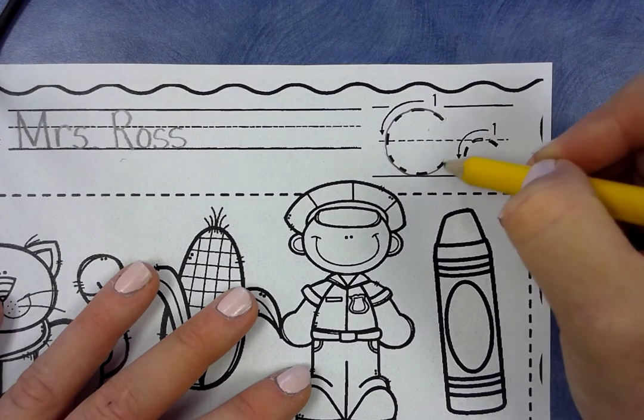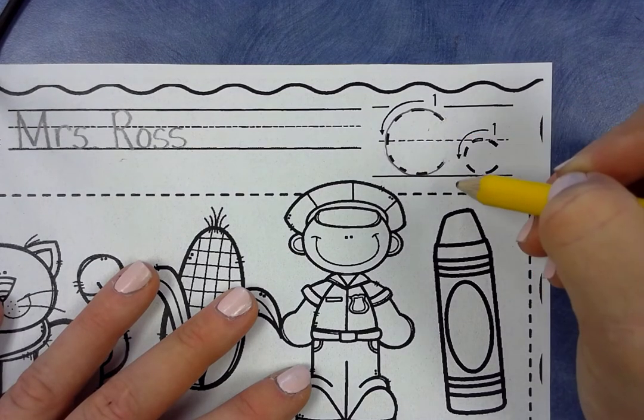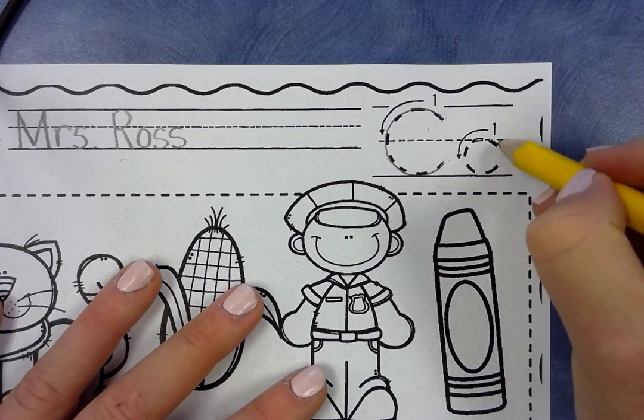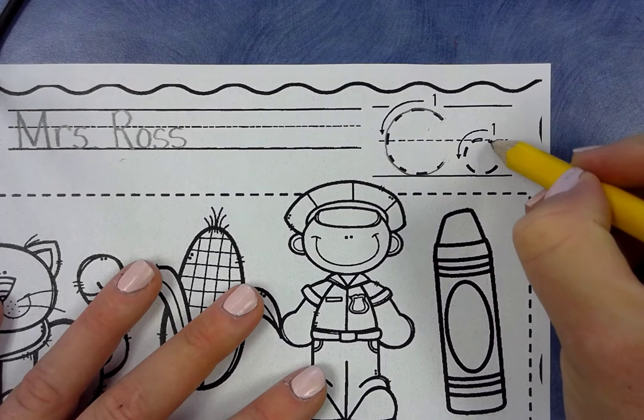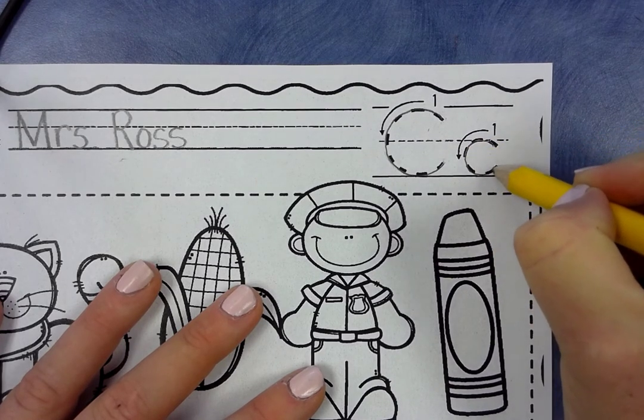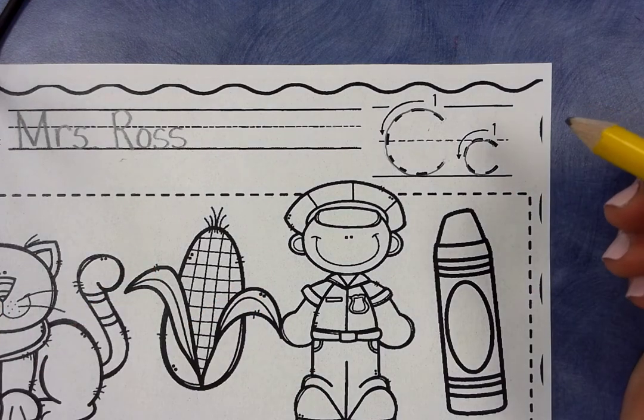Both the top and the bottom don't touch this dotted line, which we don't want them to touch that. All right. Now we're going to go down to the little C. The little C stays in the grass area. It goes up to the dotted line, and down to the grass.